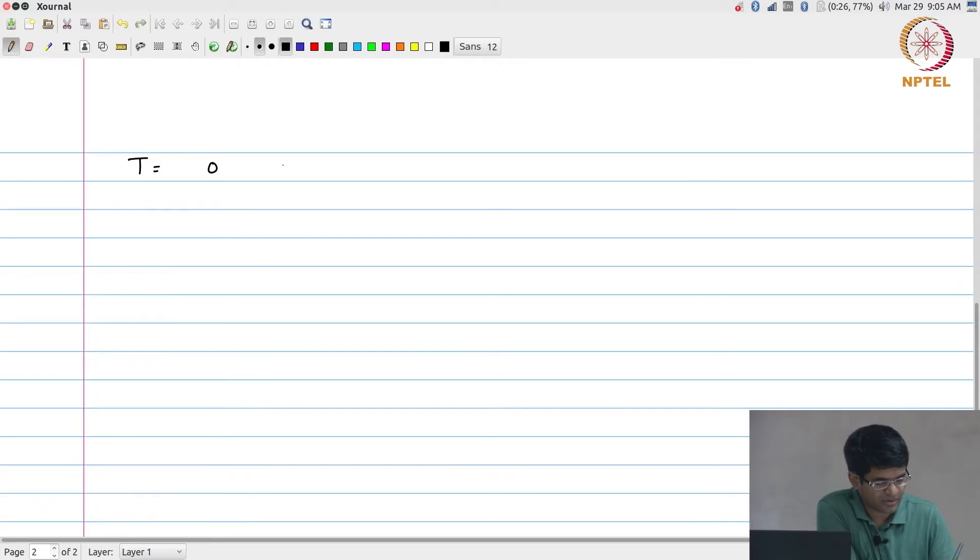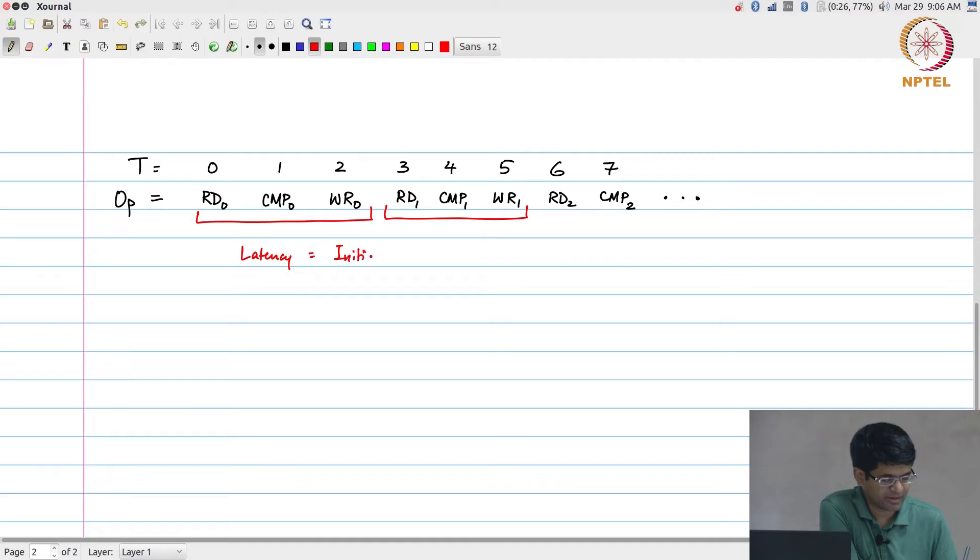With all of that in mind, let us look at the series of operations and time steps involved. If I have t, the operation is essentially going to go like this: I will first have read 0, compute 0, write 0, followed by read 1, compute 1, write 1, read 2, compute 2, and so on. Which means that the latency and the initiation interval are going to be equal to 3 cycles.